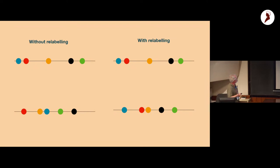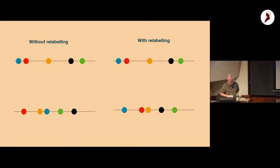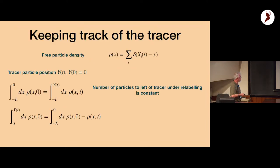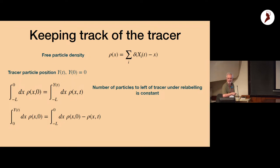The key insight used by Tripid and Paul is: you look at the free particle density and note that the number of particles to the left of the tracer must be conserved. Keeping track of the tracer means this count stays the same. Manipulating this equation, you find that the integral up to Y(t) of ρ(x,t) gives the constraint, which can be put into path integrals.